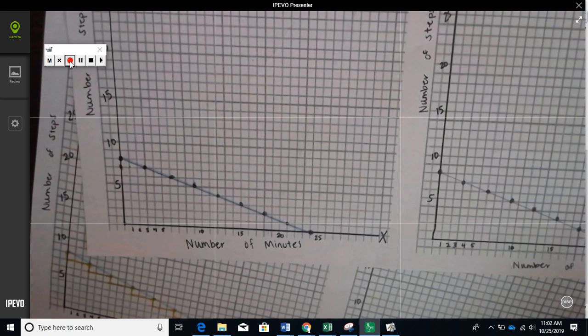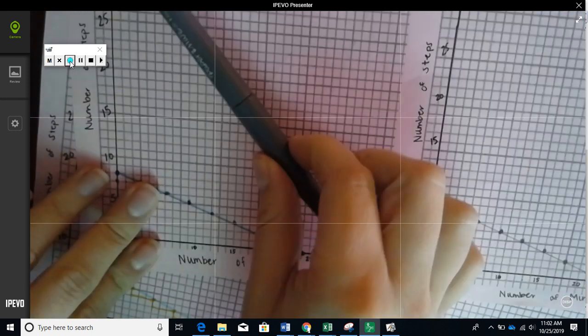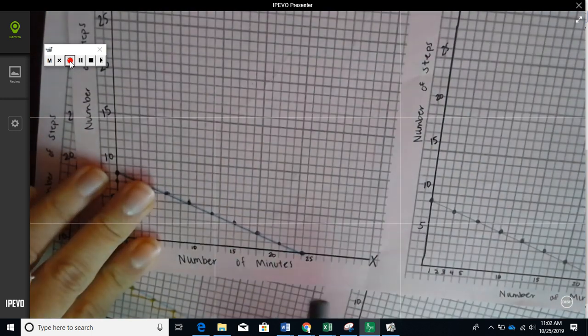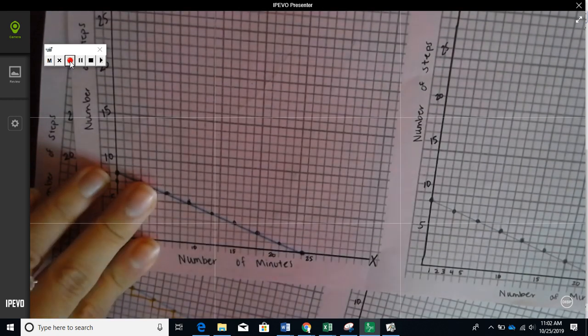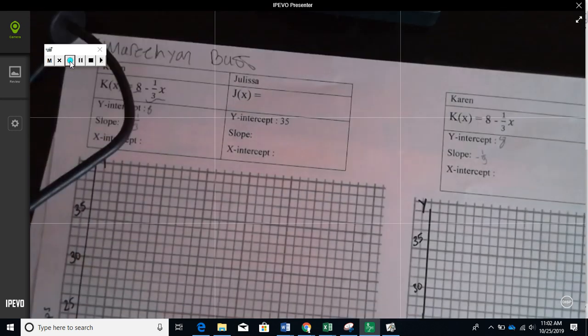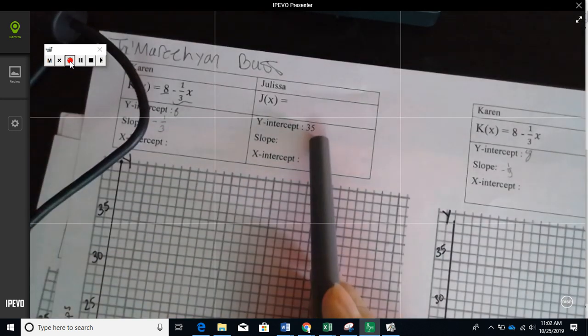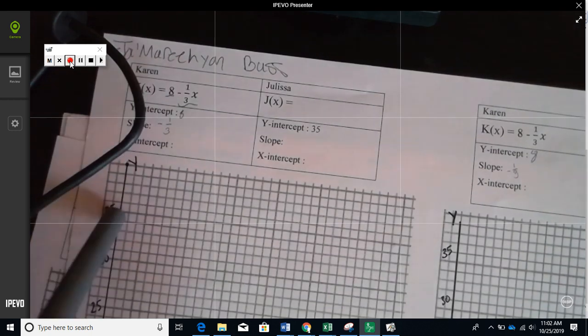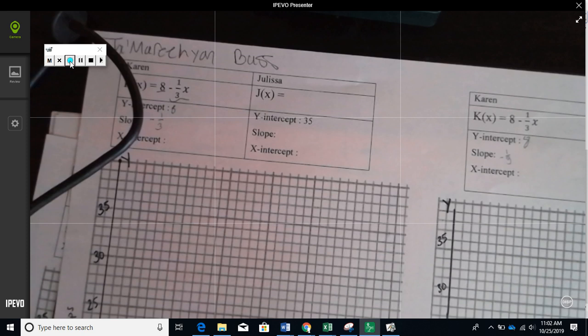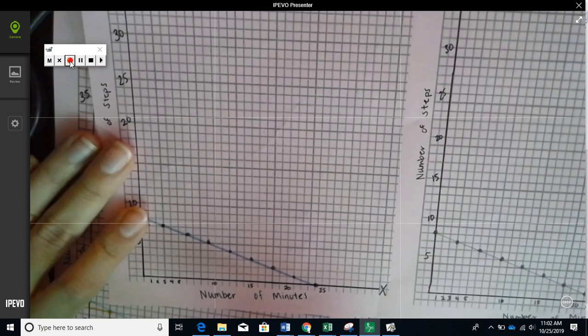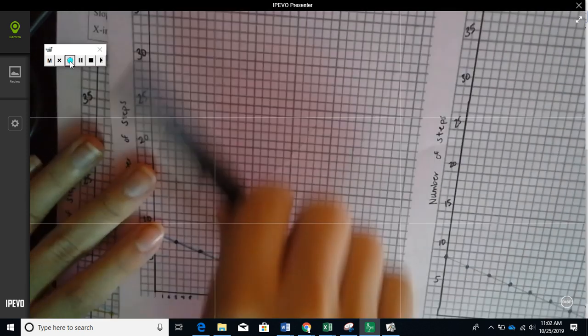You're going to make a new graph where Julissa loses the race, so that means that her time is longer, is more than 24 minutes. So for this one on the left-hand side, your y-intercept has to be 35, so it has to start at 35.